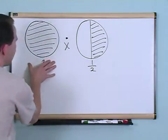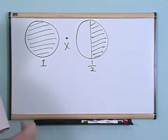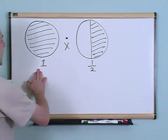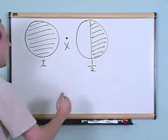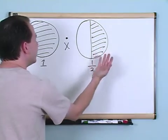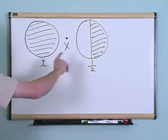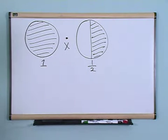Here I have one pie, and I'm multiplying by one half of a pie. So what this really means is I start with one pie, and I'm only going to take half of it away. I'm multiplying by a half, so in the end, what I'm trying to do is I'm trying to take one half of this first pie, and that is going to give me the answer.